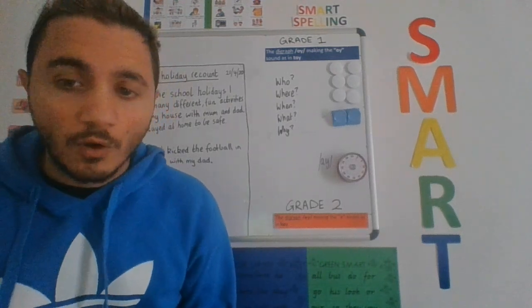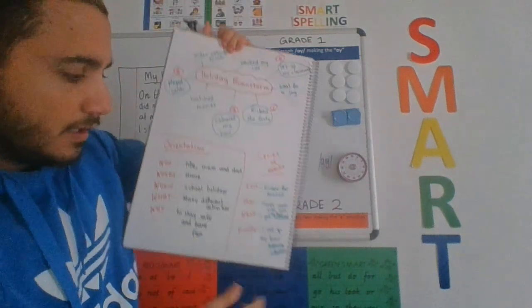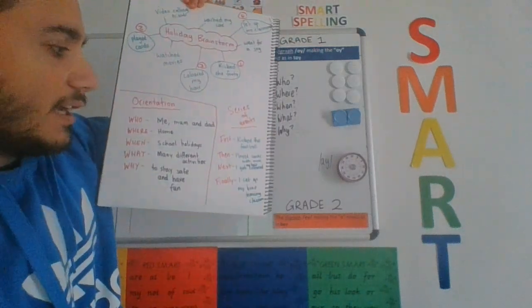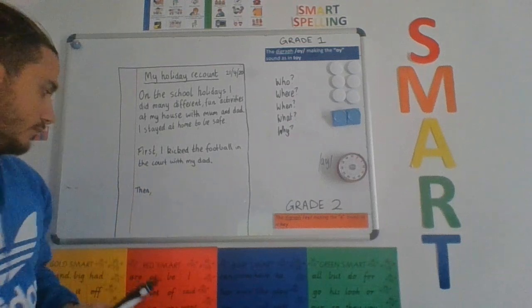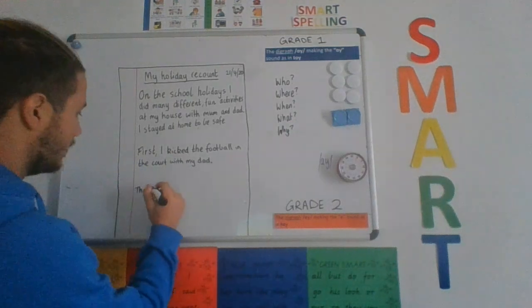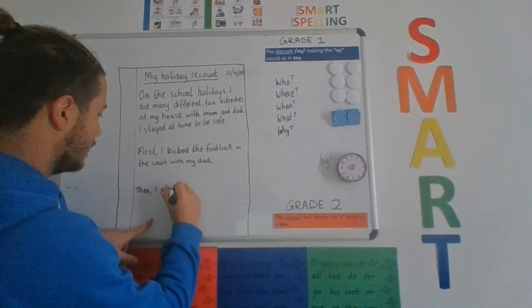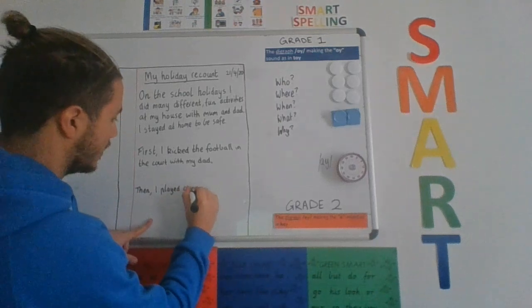The next thing, what was the next thing that I did? I forgot. I'm going to go have a look at my writer's notebook. That's what it's there for. All our ideas are in here. The next thing I did was I played cards with mum. Then I played cards with mum.